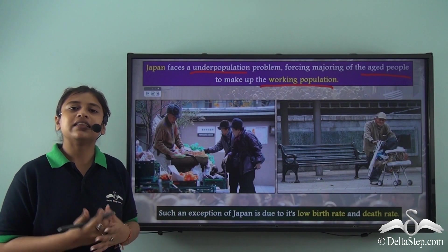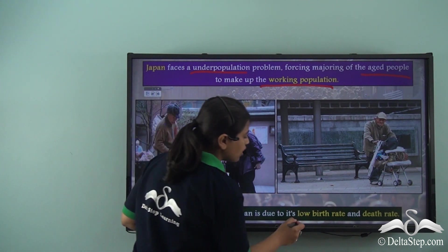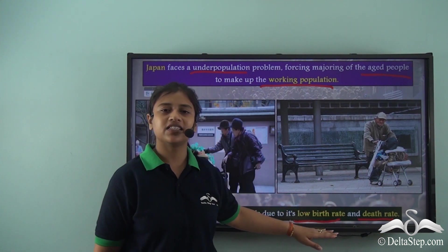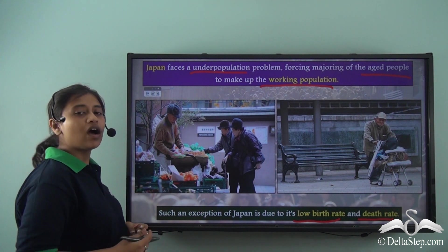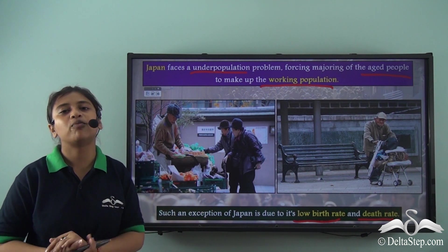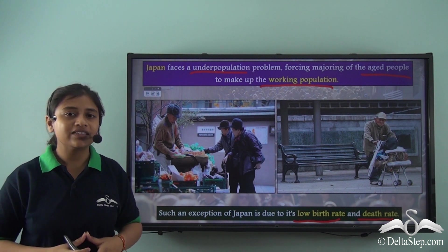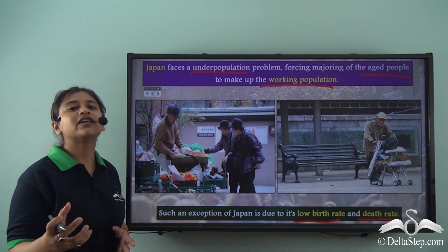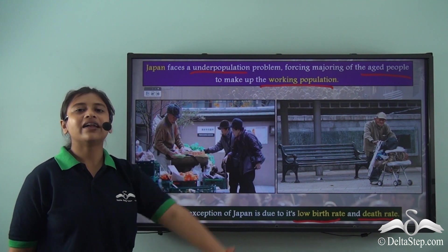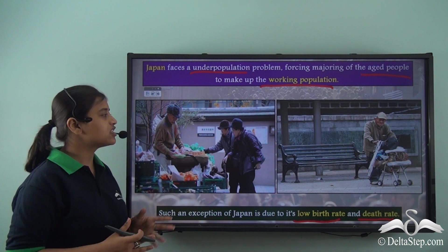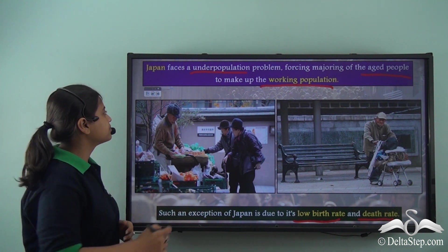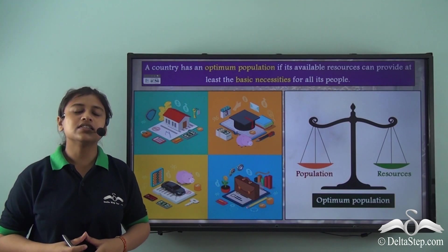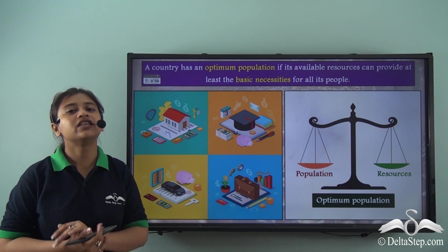Japan's situation as an exception to underpopulation is due to its low birth rate and death rate — two important phrases we will learn about in our next lesson, as they are important factors influencing population dynamics. Japan is an exception where the working population is constituted by aged people, and this throws light on the fact that the medical infrastructure of this particular country is very strong. We have also understood how resources are affected by population density in both overpopulation and underpopulation situations.